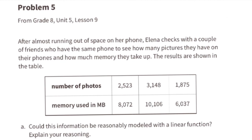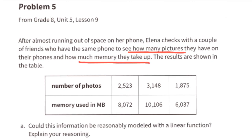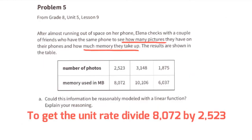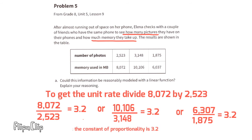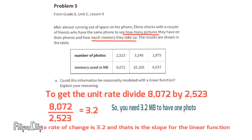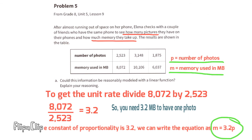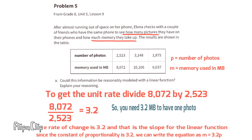Problem number five from 8th grade Unit 5 Lesson 9: Elena checks with friends to see how many pictures they have and how much memory they use. Part a: could this be modeled with a linear function? Dividing the number of photos by memory used gives 3.2 in all three cases. Yes, this is a linear function. The constant of proportionality is 3.2 — you need 3.2 megabytes per photo. The equation is M = 3.2P.